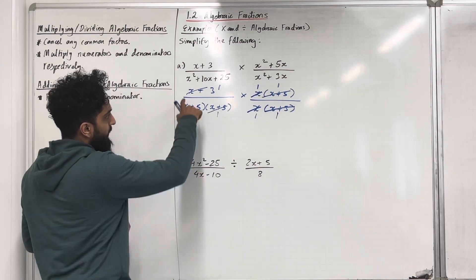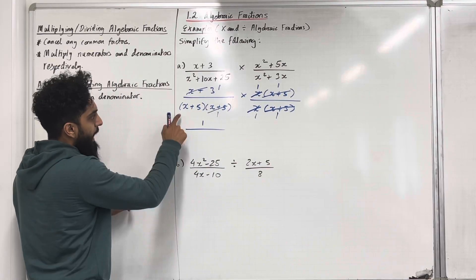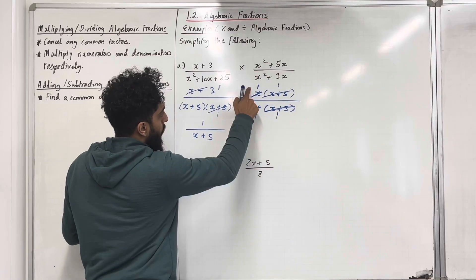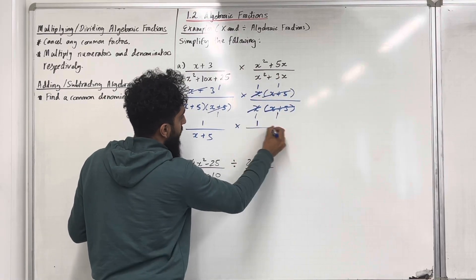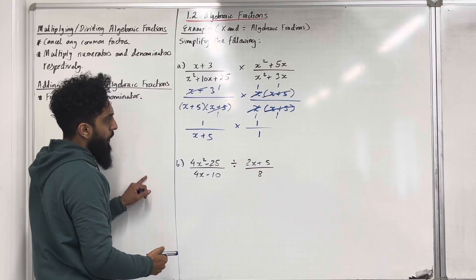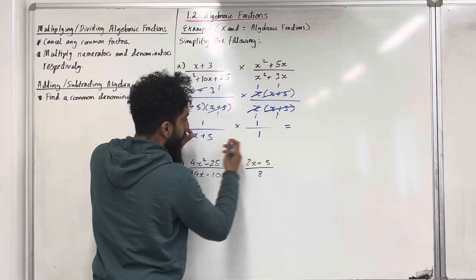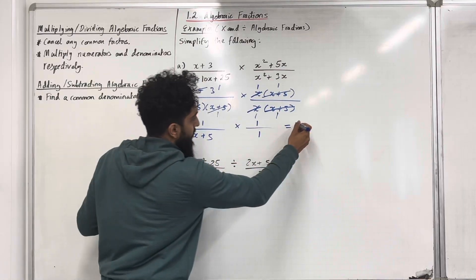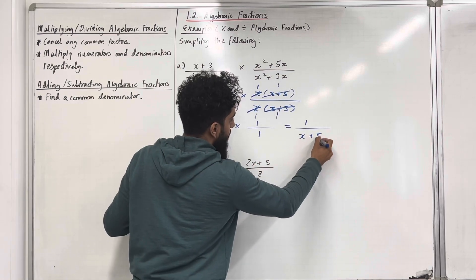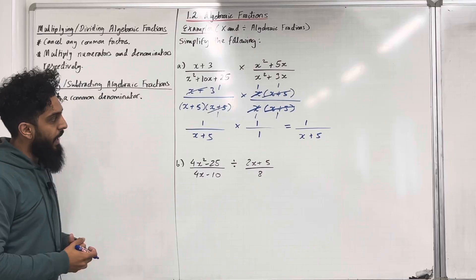This particular fraction reduces to 1 over x plus 5, multiplied by 1 over 1. So combining these two fractions, multiplying the numerators gives 1, and multiplying the denominators gives x plus 5. So the final answer is just 1 over x plus 5.